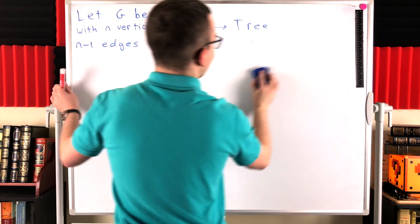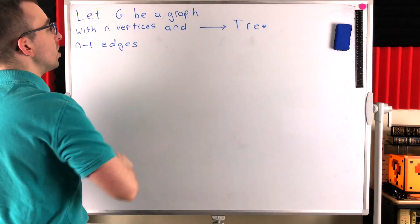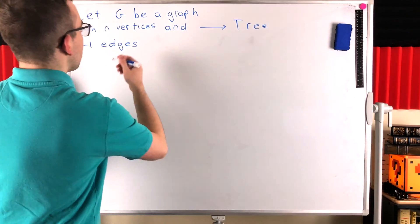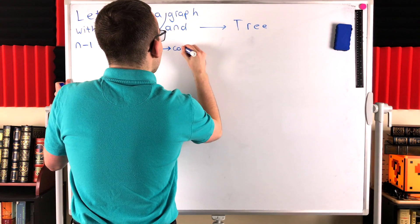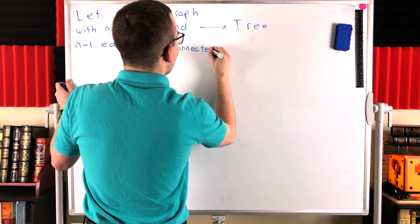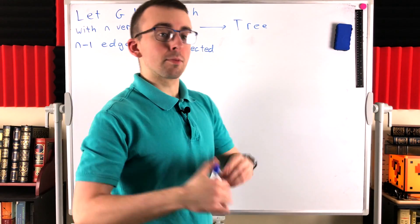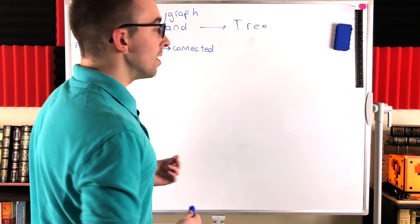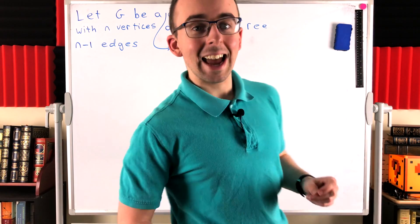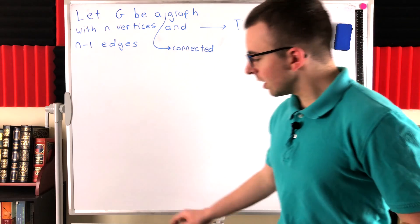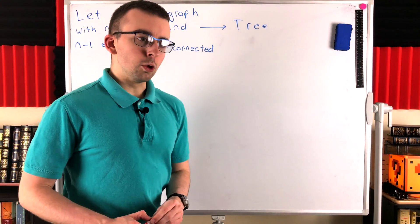In order to slightly change this statement so it becomes true, we need to say that G is a connected graph. So let G be a connected graph with one less edge than it has vertices. Then it is a tree. Then we will have proven this characterization of trees: a connected graph is a tree if and only if it has one less edge than it has vertices. Pretty neat. So let's get into the proof.